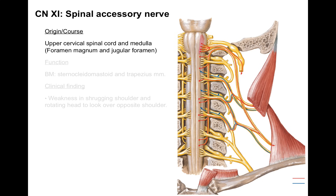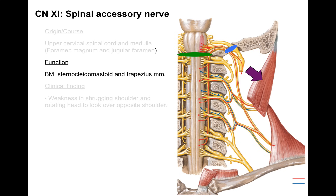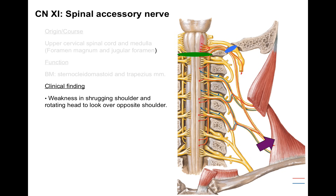Next is the spinal accessory nerve, cranial nerve 11. This one arises from the cervical cord, courses through the foramen magnum — the large opening at the base of the skull — and then back down through the jugular foramen along with 9 and 10. It innervates the sternocleidomastoid muscle, which turns your head to look over the opposite shoulder, and the trapezius, which is for shrugging the shoulder. Clinical findings from a lesion include weakness in shrugging the shoulder or rotating the head to look over the opposite shoulder.